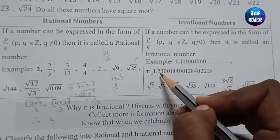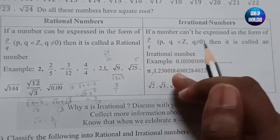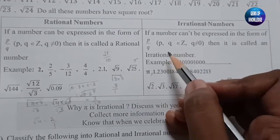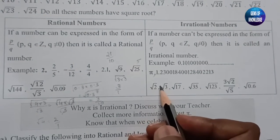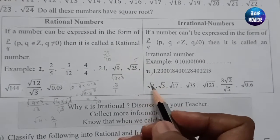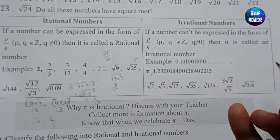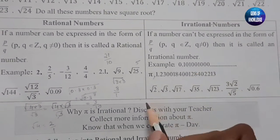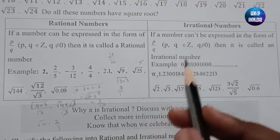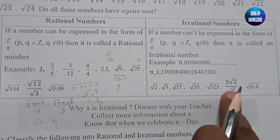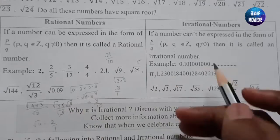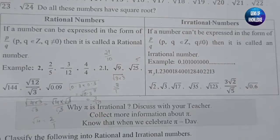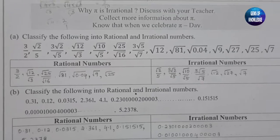Numbers like 1.23000... and so on are irrational. Also, roots which you cannot simplify to whole numbers — like root 2, which gives 1.412... and so on without ending — are irrational numbers. If you try to open such roots you get a non-terminating, non-repeating decimal, so those are called irrational numbers.